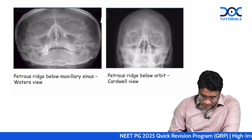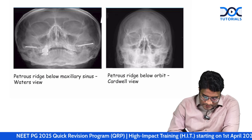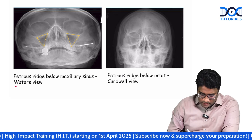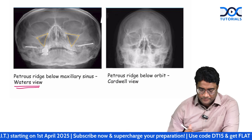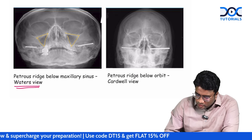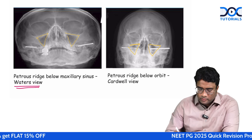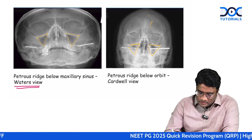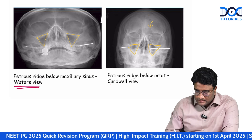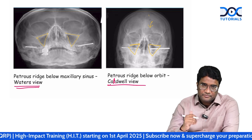To tell whether a skull radiograph is a Waters view or a Caldwell view, look at the petrous ridge. In Waters view, the petrous ridge is seen below the maxillary antrum. In a Caldwell view, the petrous ridge is below the orbit, overlapping the maxillary antrum — so you cannot comment on the maxillary sinus, only the frontal sinus.